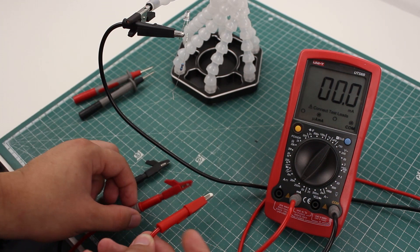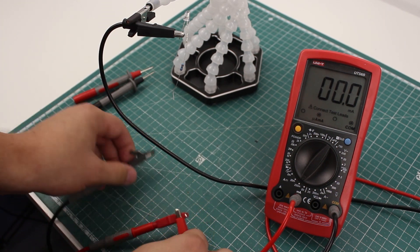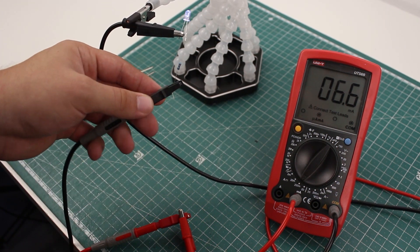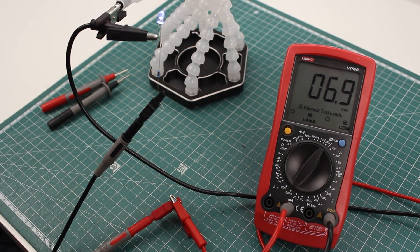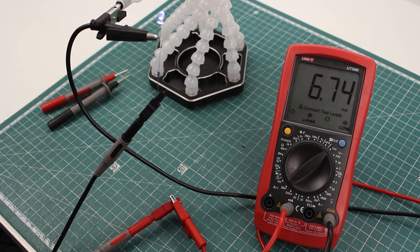With voltage and resistance, we connected the meter in parallel with the circuit, but this time we need to connect it in series so that the current passes through the meter. Since the reading is less than 20mA, I'll lower the range to get a better reading.